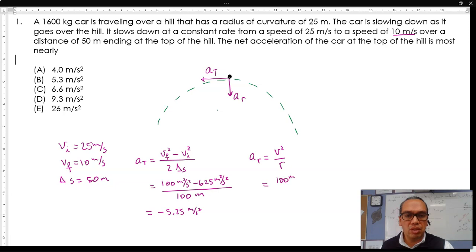Therefore, the actual or net acceleration for this car is going to be the vector sum of these two accelerations.